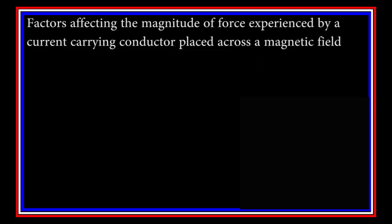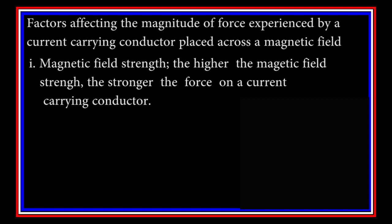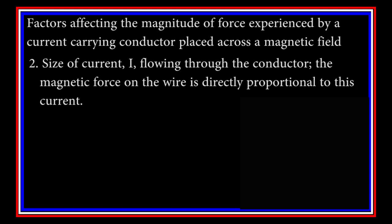Factors affecting the magnitude of force experienced by the current-carrying conductor placed across a magnetic field. One: magnetic field strength — the higher the magnetic field strength, the stronger the force on a current-carrying conductor. Two: the size of the current I flowing through the conductor — the magnetic force on the wire is directly proportional to the current.